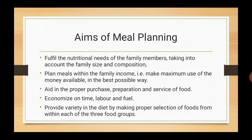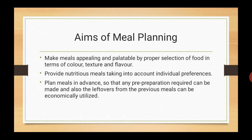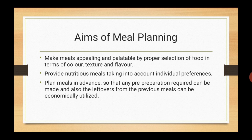Next aim is to provide variety in the diet by making proper selection of foods from within each of the three groups. Next is to make meals appealing and palatable by proper selection of food in terms of color, texture and flavor. Next is to provide nutritious meals taking into account individual preferences — persons' likes and dislikes should also be considered while preparing meals. Last is to plan meals in advance so that any pre-preparation required can be made and leftovers from previous meals can be economically utilized.